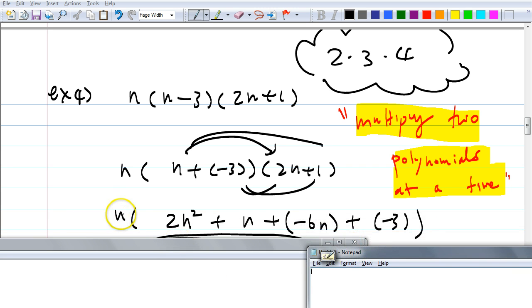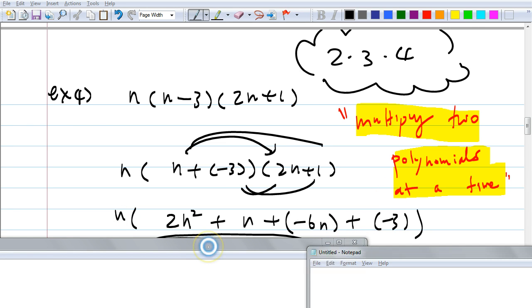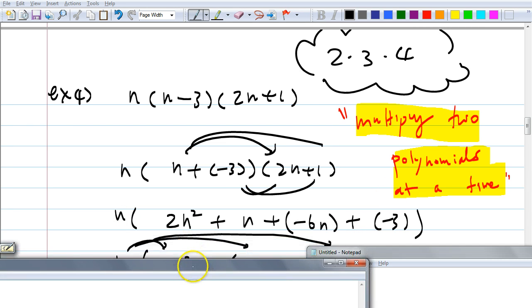And when you simplify, of course, it's n times the whole thing, right? When you simplify, you get n times what? Two n squared minus five n minus three. That's right.